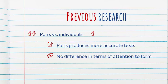Previous research has compared pairs and individuals. And the general trend is that when learners work in pairs, they tend to produce more accurate texts than if they work by themselves. But there isn't a clear indication that pairs focus more on form, that they have more of these language-related episodes than individuals.